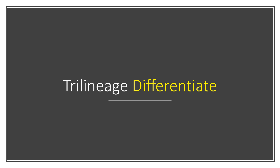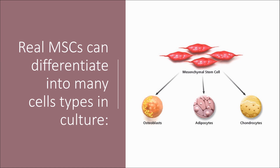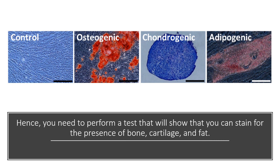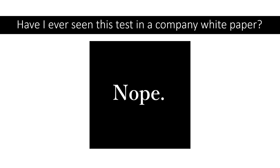Trilineage differentiation: real MSCs can differentiate into many cell types in culture — osteoblasts, adipocytes, chondrocytes. Hence, you need to perform a test that stains for the presence of bone, cartilage, and fat in order to say that you've got stem cells. I have yet to see a single company white paper include this.